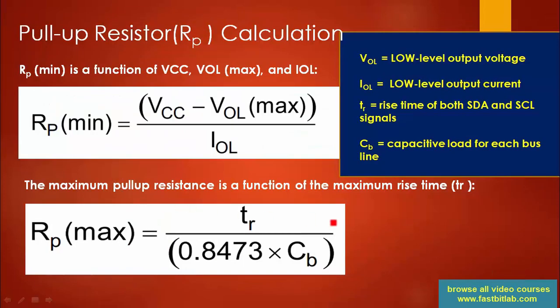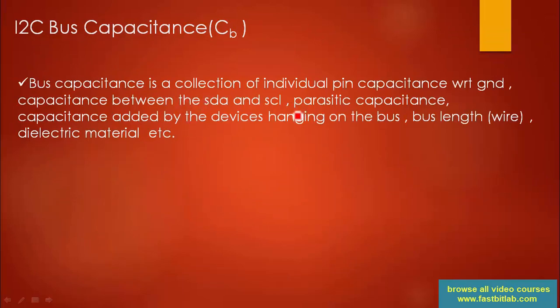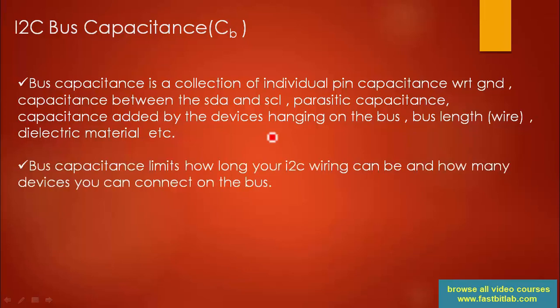Bus capacitance is a collection of: individual pin capacitance with respect to ground, capacitance between SDA and SCL, parasitic capacitance, capacitance added by the devices hanging on the bus, bus length, and the dielectric material medium. All these contribute to accidental capacitance on the I2C bus. As bus length increases, capacitance increases. More devices on the bus means more pin capacitance is added.